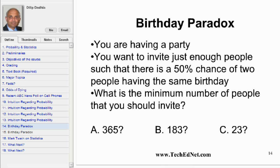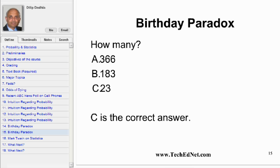You are having a party. You want to invite just enough people such that there is a 50% chance of two people having the same birthday. What is the minimum number of people that you should invite? 365, 183, or 23? The correct answer is 23. Does the number seem too low? That's why it is called the birthday paradox. You will calculate that number in homework assignment number 3.